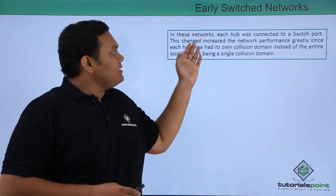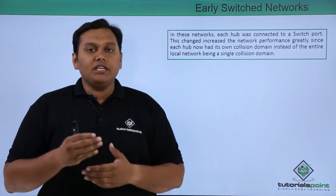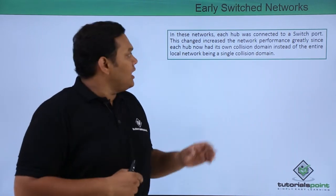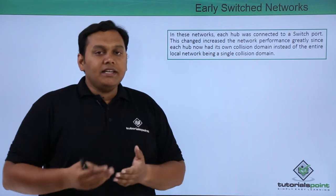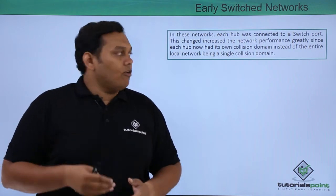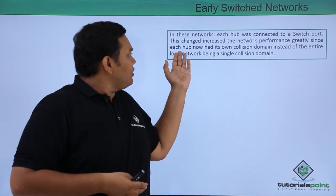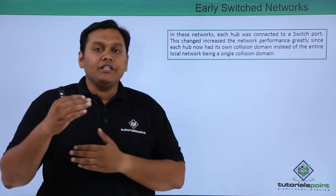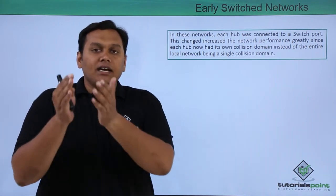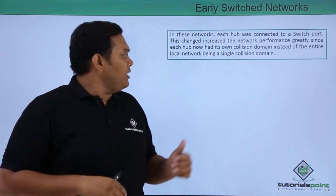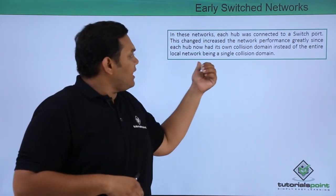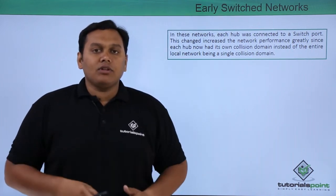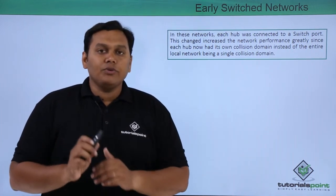In these networks, each hub was connected to a single port on a switch. This change increased network performance because each hub now has its own single collision domain, instead of having a single collision domain for the entire LAN network. This is about the early switched network.